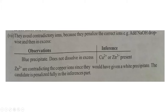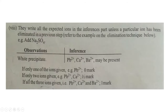You should write all expected ions in the inference part unless a particular ion has been eliminated. For example, when adding sodium sulfate, you expect a white precipitate with lead, calcium, and barium ions. Writing only one ion gets zero; writing two gets partial marks; writing all three gets full marks. Be careful not to include ions that contradict your observation.